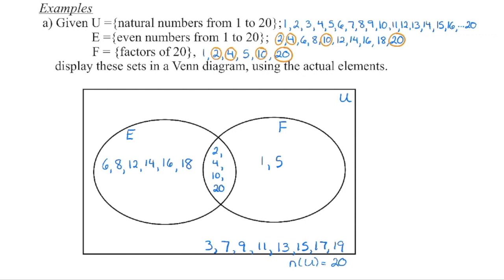A quick observation: since set E contains all even numbers, the F only section contains the odd factors of 20. Every odd number that is not already in those subsets is going to be part of the complement.